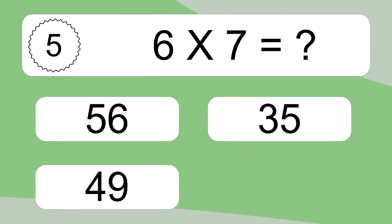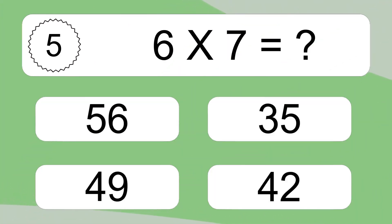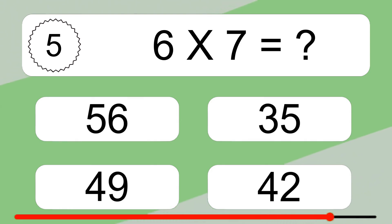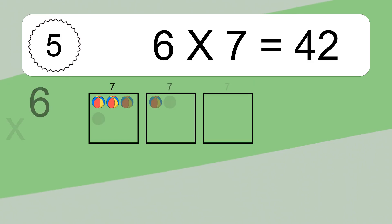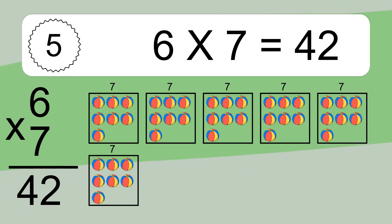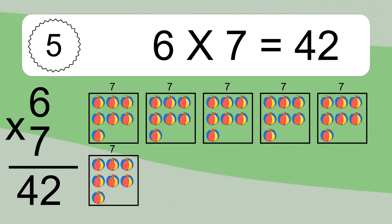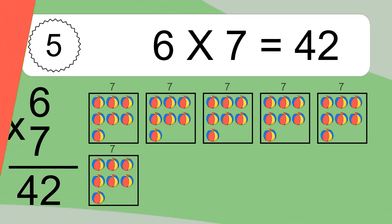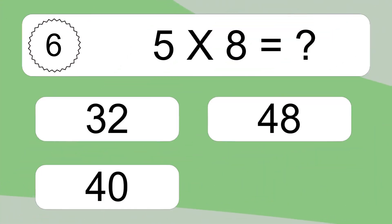6 times 7 equals what? 6 times 7 equals 42. We have 6 boxes and each box has 7 colorful balls inside. If you count all the balls in all the boxes together, you will have 6 times 7 balls. This equals 42 balls.